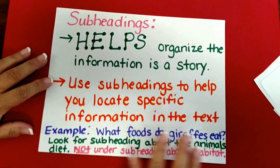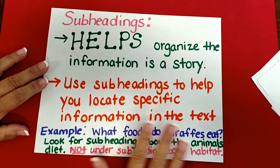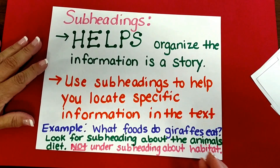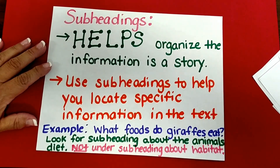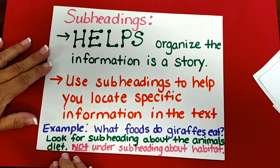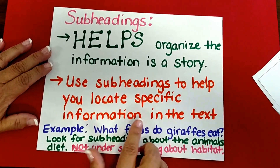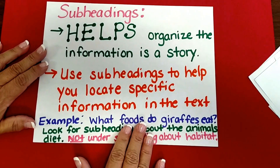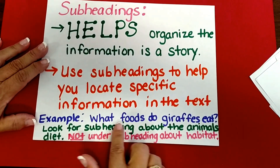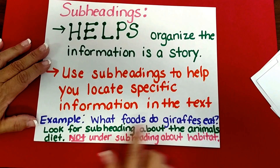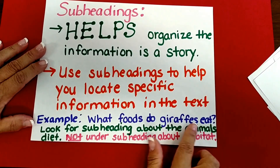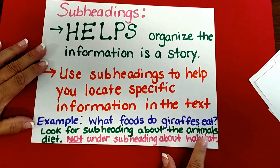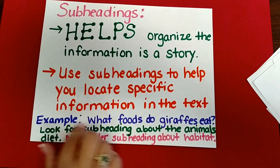Subheadings will help you organize information in a story. Sometimes stories have lots and lots of information. Subheadings help you group it so that you can know where to find and locate different things within the story. For example, if you're reading a story and the question asks what foods do giraffes eat, you're going to go to the subheading about their diet, not about where they live or what their habitat is.